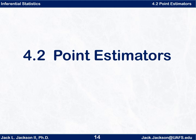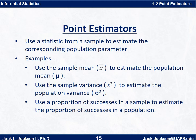So what is a point estimator? A point estimator uses a statistic from a sample to estimate the corresponding population parameter. For example, we can use the sample mean x-bar to estimate the population mean mu, or we could use the sample variance s-squared to estimate the population variance sigma-squared, or we could use the proportion of successes in a sample to estimate the proportion of successes in a population.